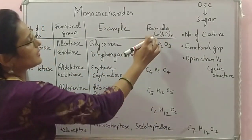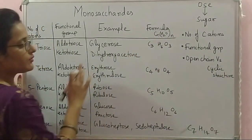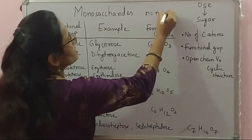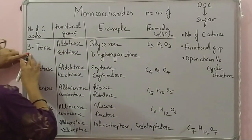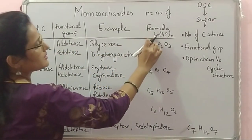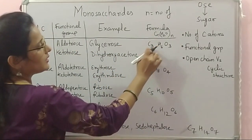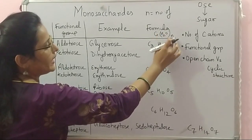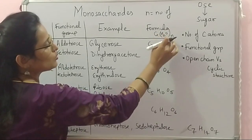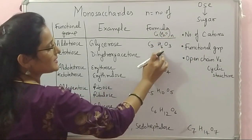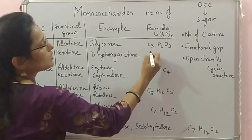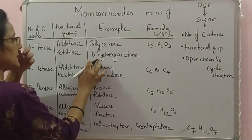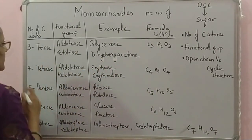The general formula is Cn(H2O)n, where n equals the number of carbon atoms. For a triose, n = 3, so the formula is C3(H2O)3, giving C3H6O3. This is the molecular formula of both glycerose and dihydroxyacetone. If the number of carbon atoms is four, the monosaccharide is called a tetrose — aldotetrose if aldehyde is the functional group, ketotetrose if it has ketone. The example of aldotetrose is erythrose and of ketotetrose is erythrulose. The formula is C4H8O4.